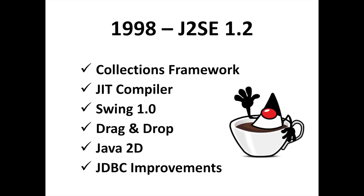Introduced in 1998 as a quick fix to the former versions, version 1.2 was the start of a new beginning for Java. The JDKs of version 1.2 and later versions are often called Java 2 as well. Major changes include: collections framework, just-in-time compiler, Java Foundation Classes with Swing 1.0, drag-and-drop, and the Java 2D library.